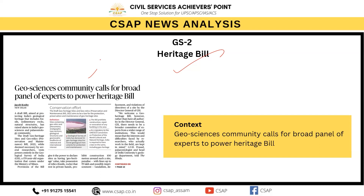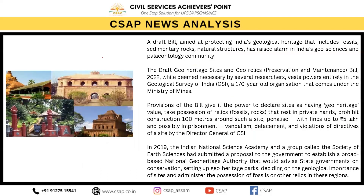India has various types of heritage — cultural, natural, and intangible. Natural heritage sites such as Kaziranga National Park, Sundarbans, Valley of Flowers National Park, and the Western Ghats are among the world's most biodiverse. These heritage sites need better protection, and therefore the geosciences community has called for a broad panel of experts to drive the Heritage Bill. Assam is also focused on conserving its respective heritage.